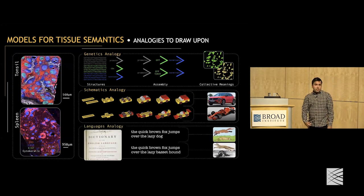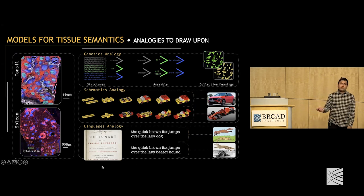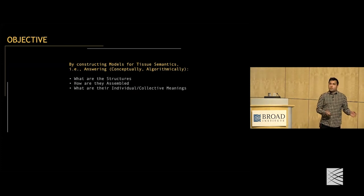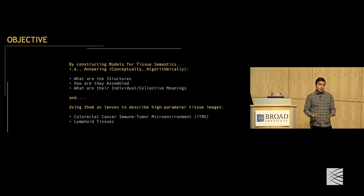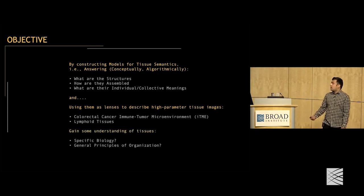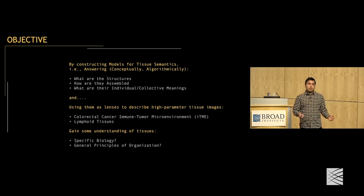Or should we think about the structures of a tissue by analogy with words in a language, which when assembled together form sentences, and different related sentences have different related meanings? The objective of this research is to construct models for tissue semantics — answering these three questions from a conceptual and algorithmic perspective — and use them as lenses to describe high-parameter tissue images, talking about the colorectal cancer immune tumor microenvironment as well as lymphoid tissues.